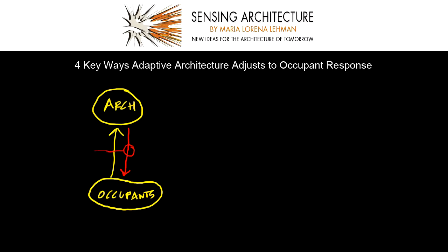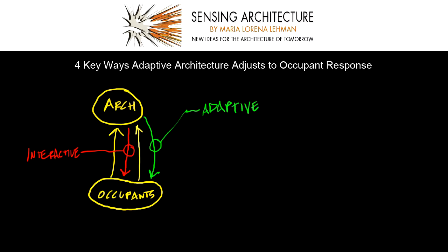When an architecture responds, this can make it interactive as it engages with its occupants in real time. But after its first response, an occupant can emit a certain behavior, and the architecture through its sensors can respond once again — this time adjusting its response to best fit occupant needs. This begins to make architecture go from being an interactive design toward being adaptable. So the question is: what are ways that adaptive architecture can adjust to occupant response in real time?